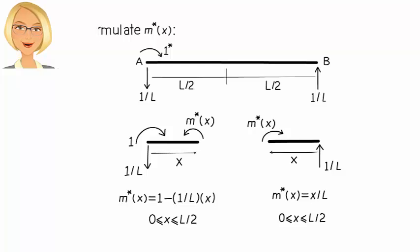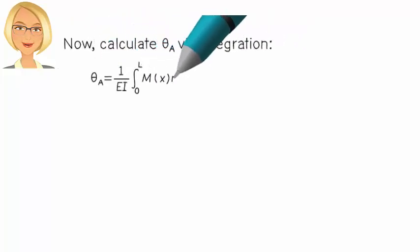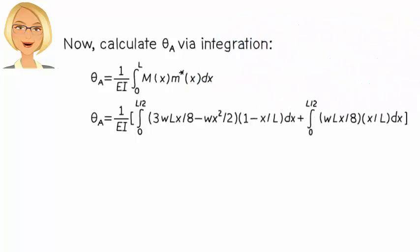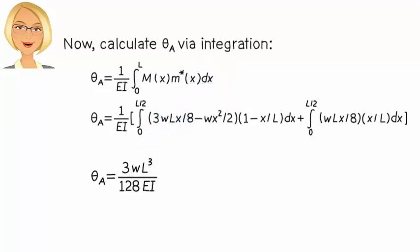Now, we can express theta A as the integral of M(x) times M star x, like this. So theta A equals 3WL cubed over 128EI.